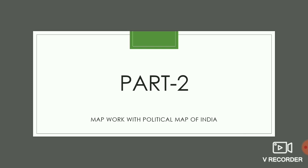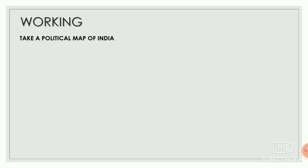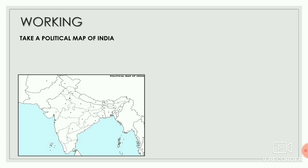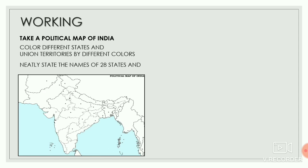Part 2 is map work with a political map of India. In this part we will do the map work with the help of a political map of India. To perform this activity, take a political map of India — in the political map, the states and Union territories are clearly bifurcated. Now color the states and Union territories with different colors.